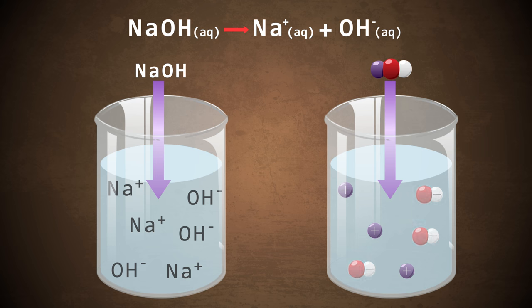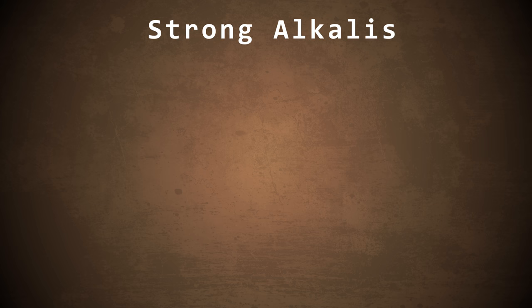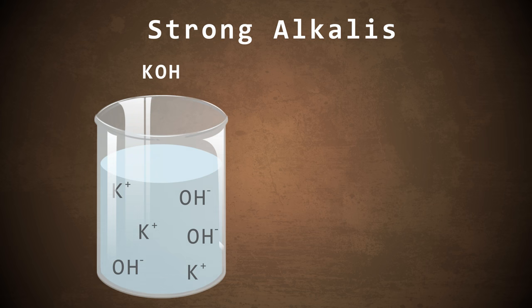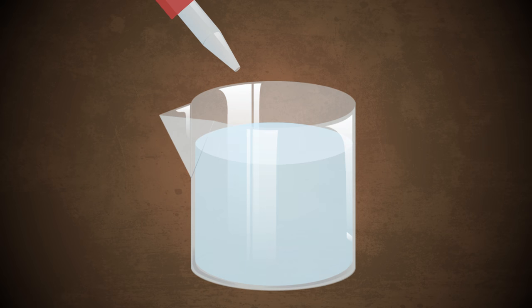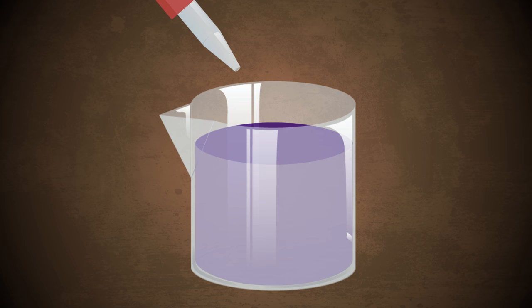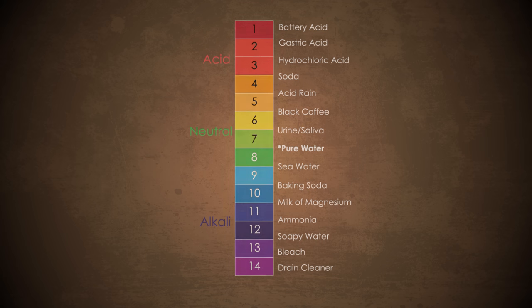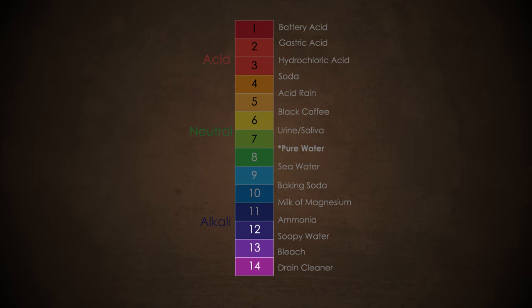So the concentration of OH minus ions in a solution containing a strong alkali will be high. Other examples of strong alkalis include potassium hydroxide and calcium hydroxide. These substances when dissolved in water will turn universal indicator solution a very deep purple and are highly corrosive. The pH of these substances will be at the higher end of the scale.